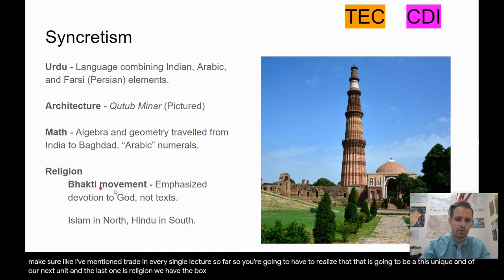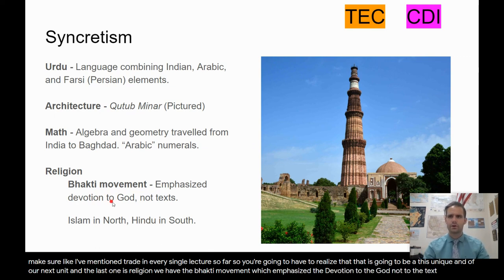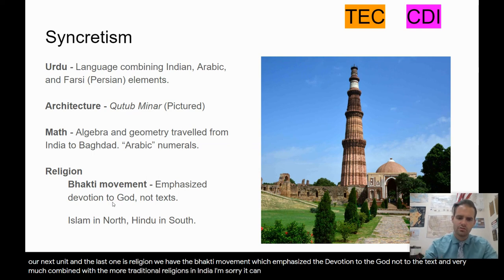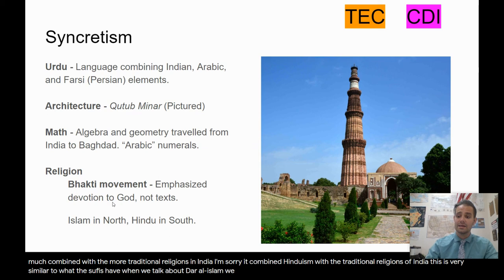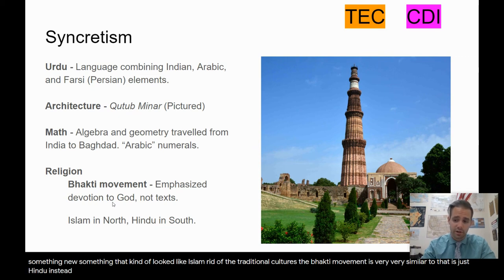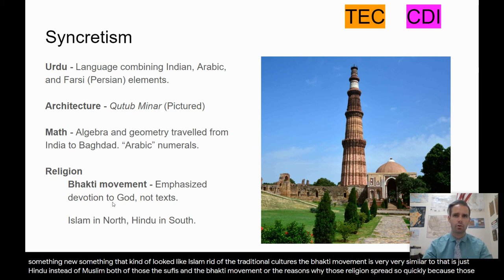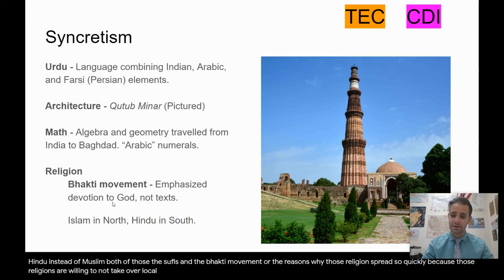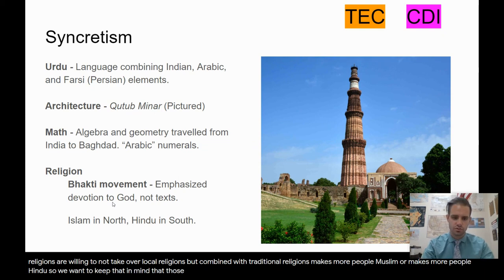The last example is religion: the Bhakti movement, which emphasized devotion to God rather than to the text, and combined Hinduism with more traditional religions of India. This is very similar to the Sufis in Dar al-Islam — Islam combined with many local traditional religions and created something new that looked like Islam without eliminating traditional cultures. Both the Sufi movement and the Bhakti movement are reasons why those religions spread so quickly, because they were willing to combine with traditional religions rather than replace them, making more people Muslim or Hindu.